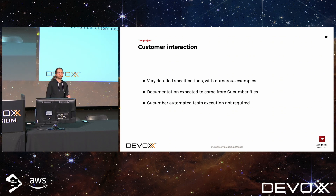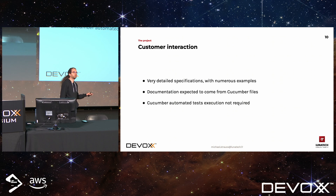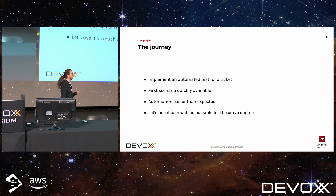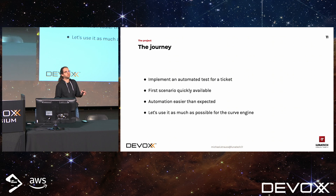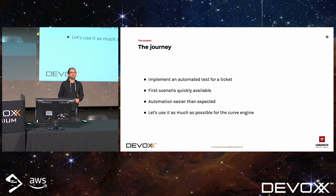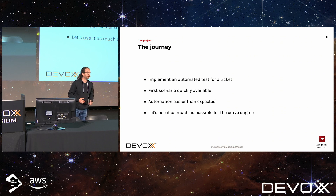As an output, they required us to provide Cucumber scenarios, though they didn't want the execution report — just the scenarios themselves. So how did we approach the task? We could have been lazy: write the feature, write our unit tests, write some additional Cucumber scenarios, and be done. Just an additional step. But we are developers, we had a shiny new toy to test and play with. So why not try the automation part?